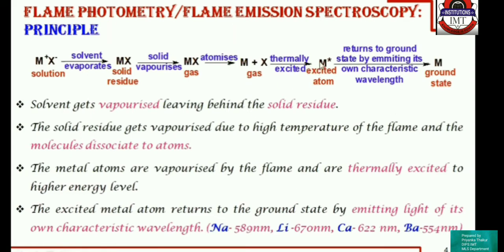This excited atom returns back to its ground state by emitting its own characteristic wavelength. Each alkali and alkaline earth metal has its own characteristic wavelength. For example, sodium at 589 nanometers, lithium at 670, calcium at 622, barium at 554, etc.